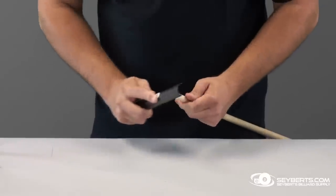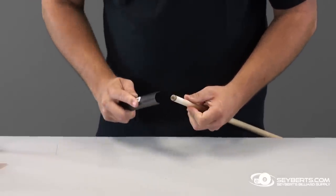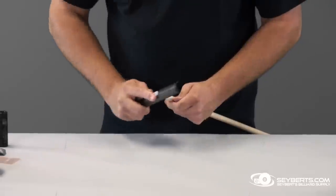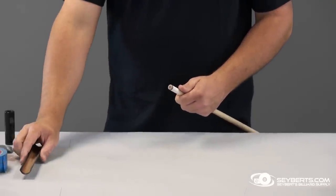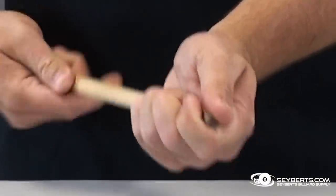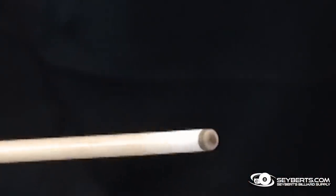That's pretty much it. Get it scuffed up - the more scuffed up, the better it's going to hold chalk. And there you go, finished tip with our kit. Takes a little practice - I mean, don't go out and try it on your $1,500 custom cue. Do some house cues first, but I think with enough practice, you're going to get some really good results.